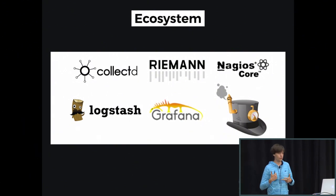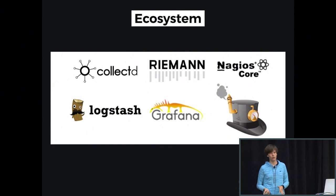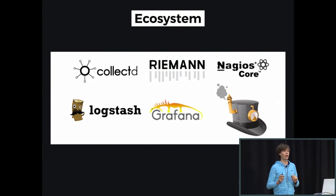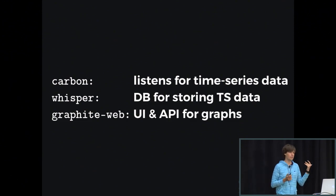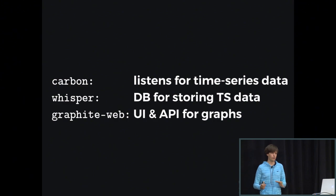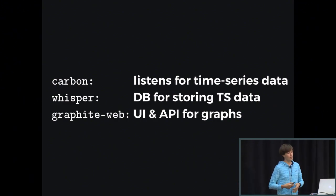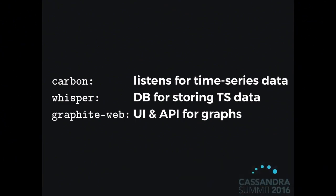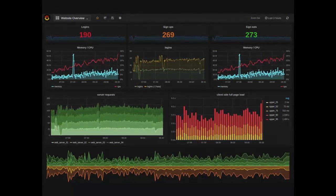The architecture of Graphite consists of three parts. Carbon receives the data, Whisper is a file format database for storing time series data, and Graphite Web is the UI to build dashboards and represent graphs — the user-facing face of Graphite. There is also Grafana, created several years ago, which has become increasingly popular and many people now use it as their default dashboard.